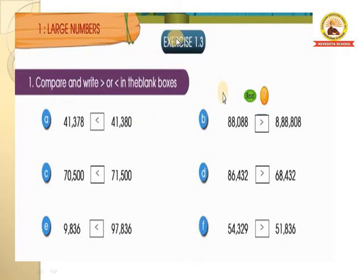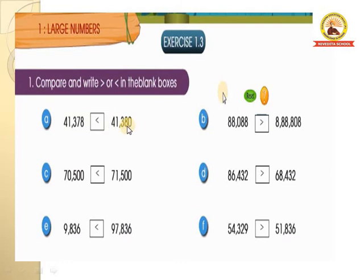The exercise part is given children. Exercise 1.3: compare and write greater or smaller in the blank boxes. First one A: 41,378 and 41,380. 41 and 41 are same, 3 and 3 are same. Next: 7 versus 8 — 8 is greater. So the fish opens its mouth towards the greater number: 41,378 is lesser than 41,380.